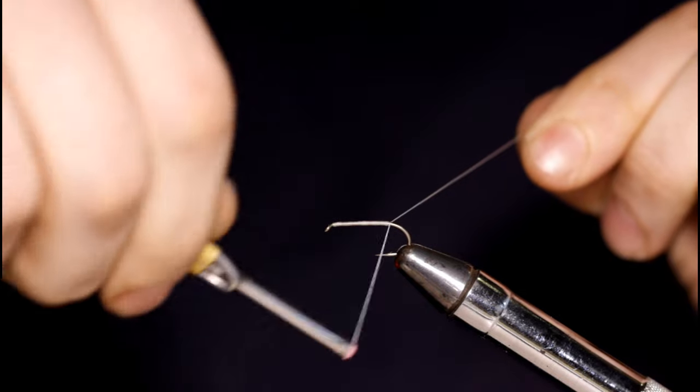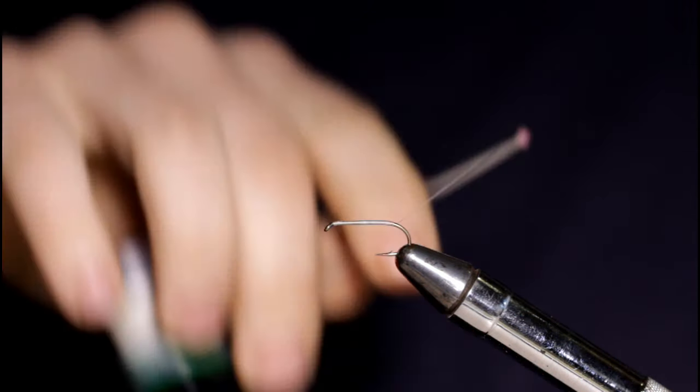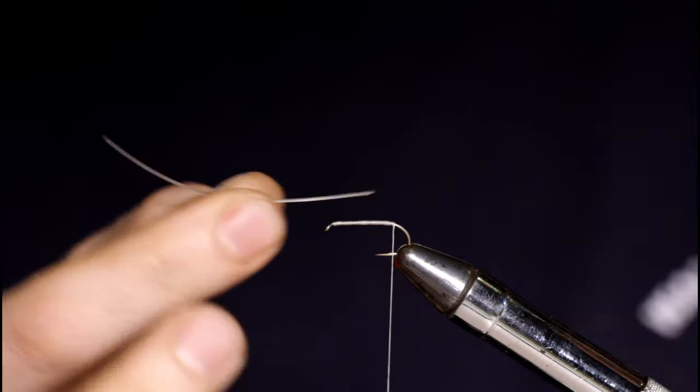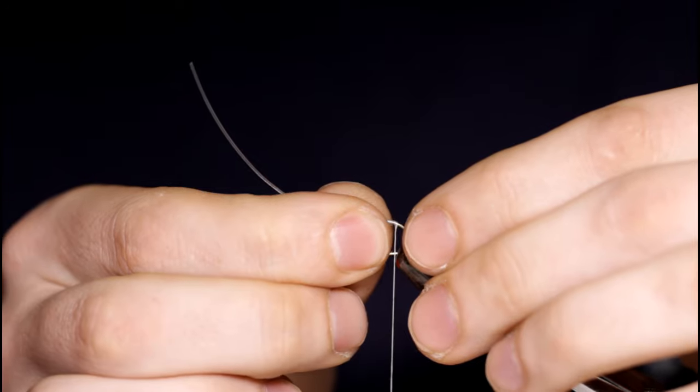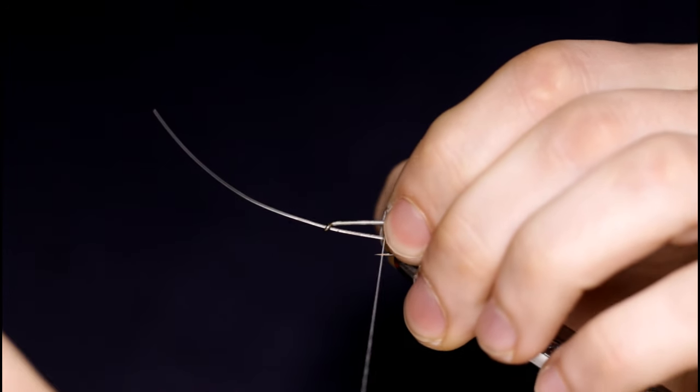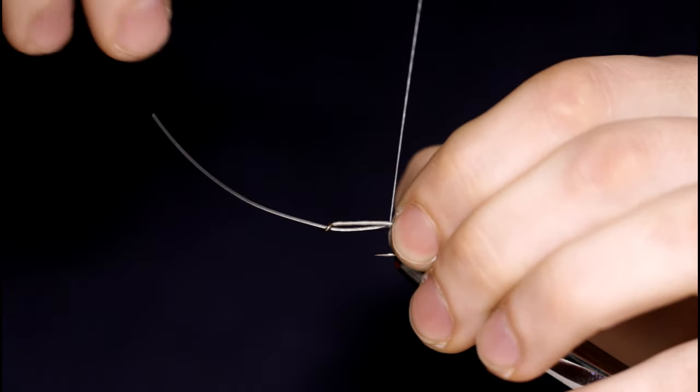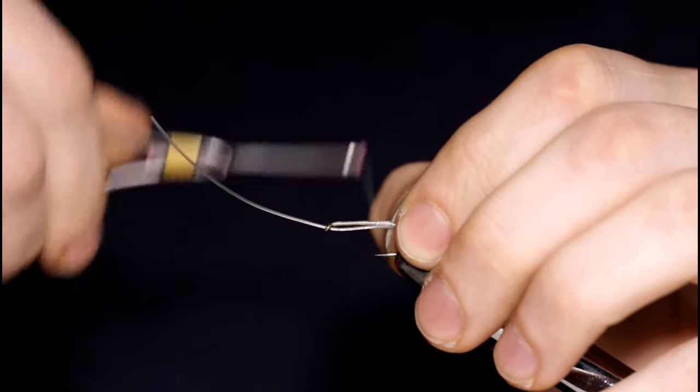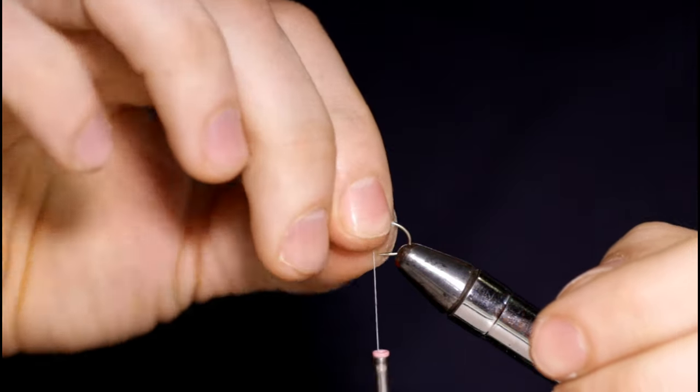I've started some white 210 UTC thread on the hook shank, snip off the tag, and I'll stop here at the barb and grab a 30 pound test piece of monofilament. I've pre-cut this to about 3 inches long. I'm just going to secure this with some thread wraps under the hook shank and make sure that it's riding straight with the hook. Then I'll finish securing it on here.